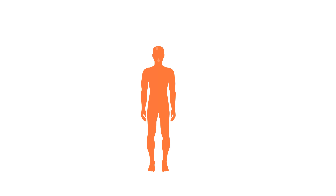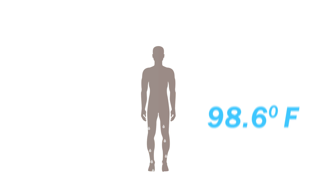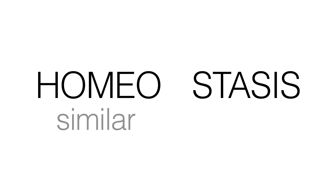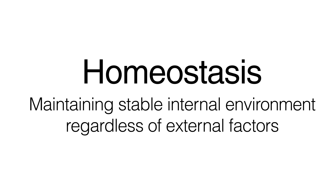For example, our body starts sweating to cool down during summer to maintain a stable body temperature of 98.6 degrees Fahrenheit. A failure of homeostasis to maintain normal body temperature after exposure to extreme heat will result in hypothermia, when the body is unable to cool itself. The word homeostasis is derived from Greek words homeo and stasis. Homeo means similar; stasis means stable. Homeostasis means maintaining a stable internal environment regardless of external factors.